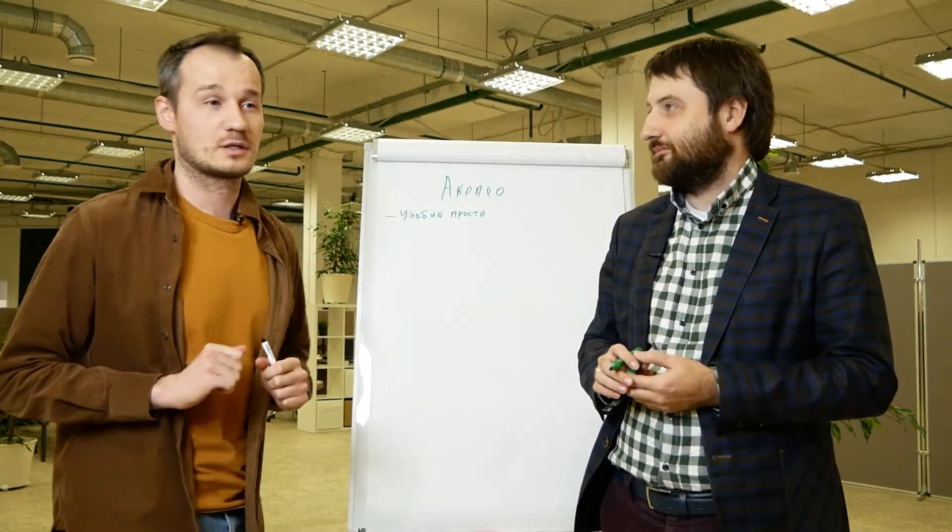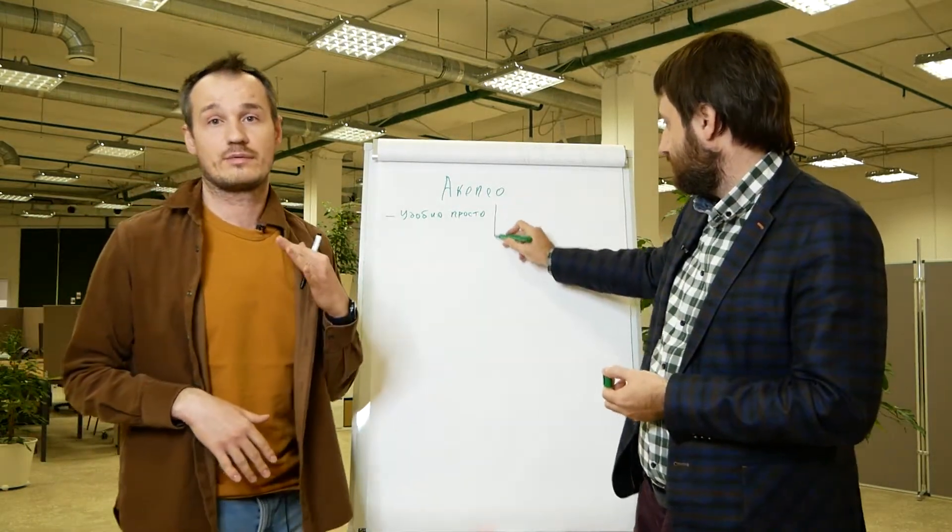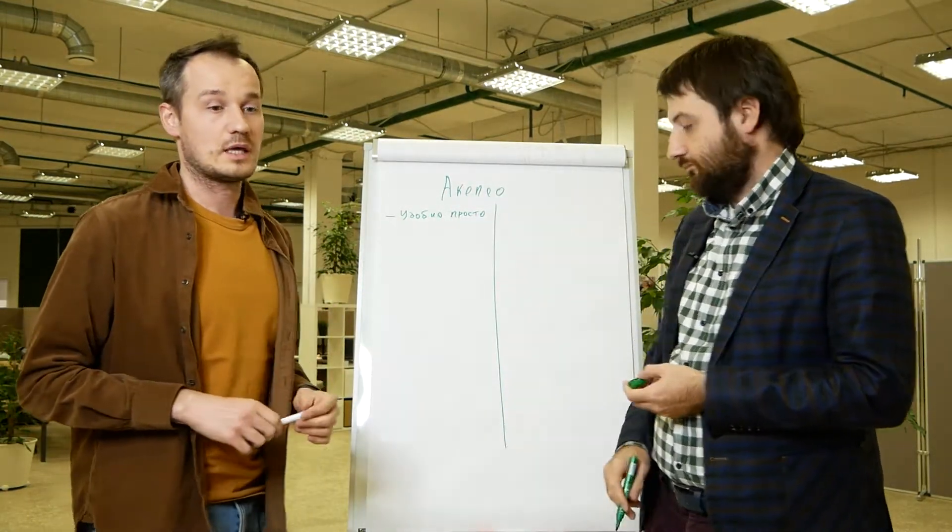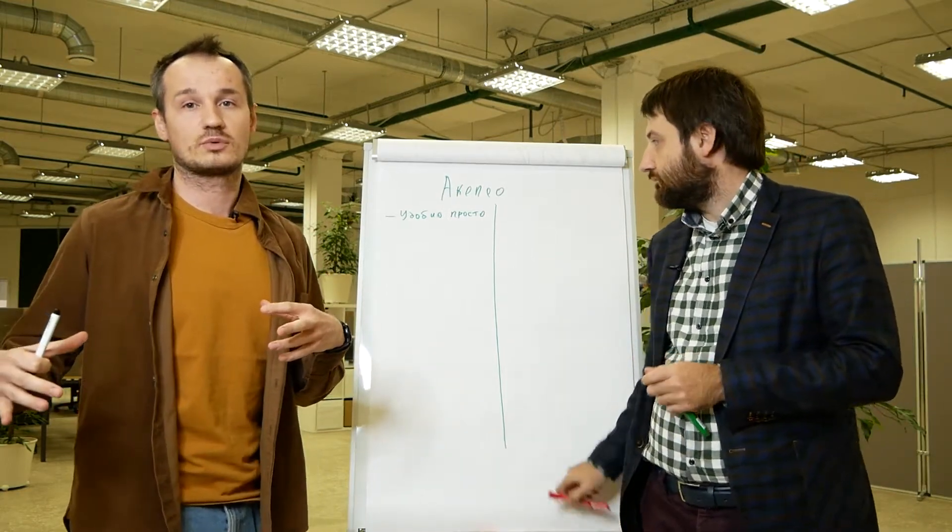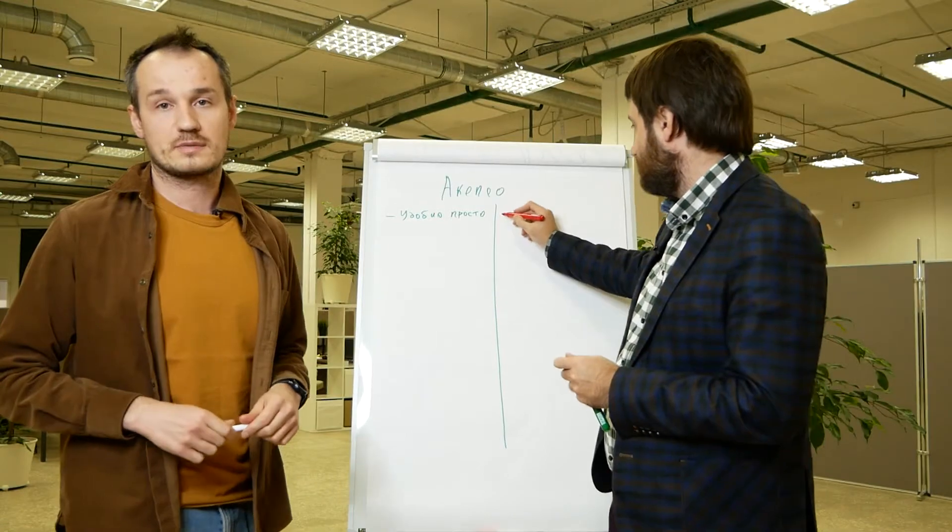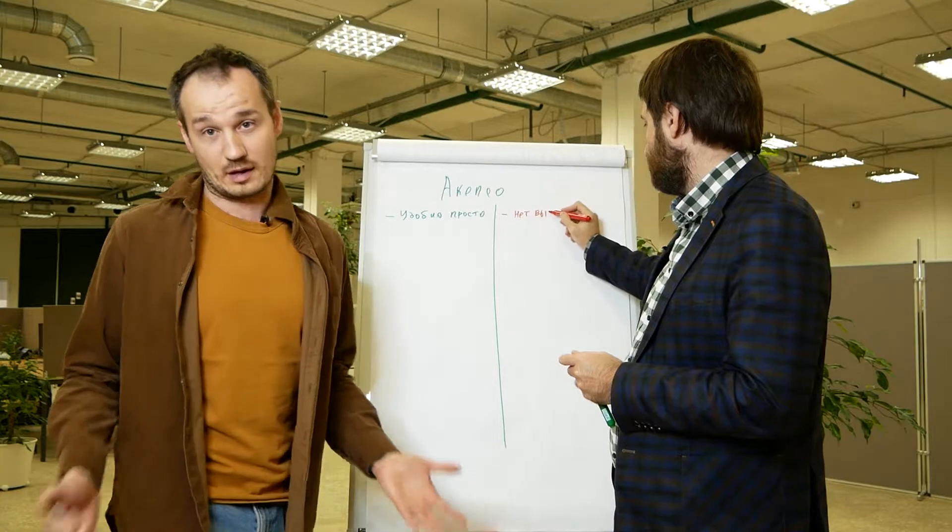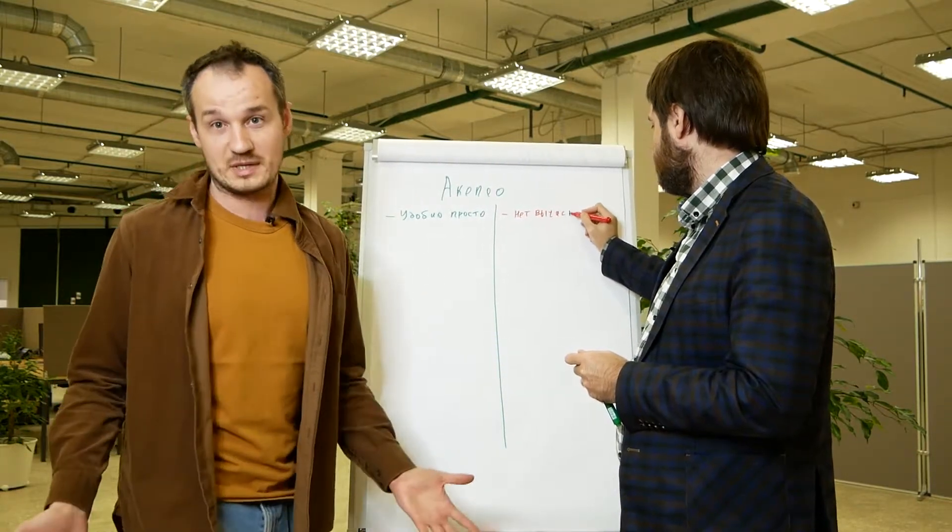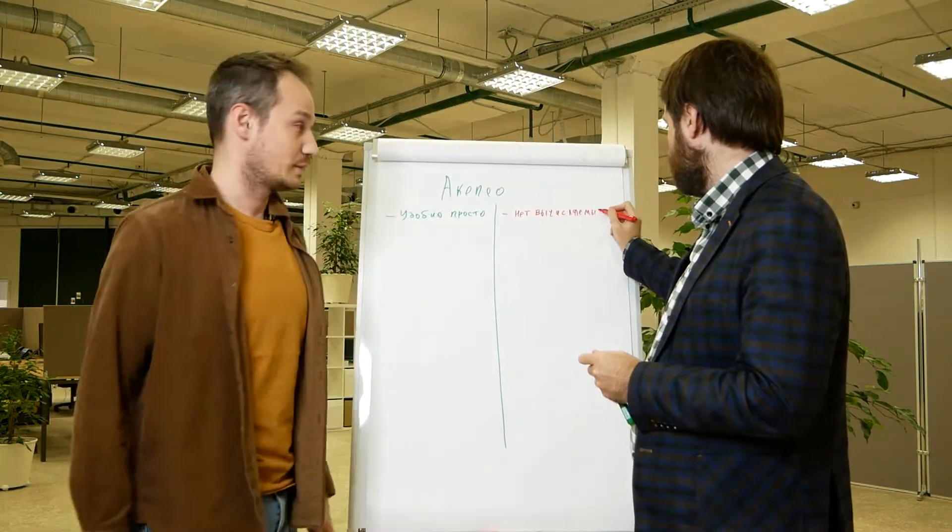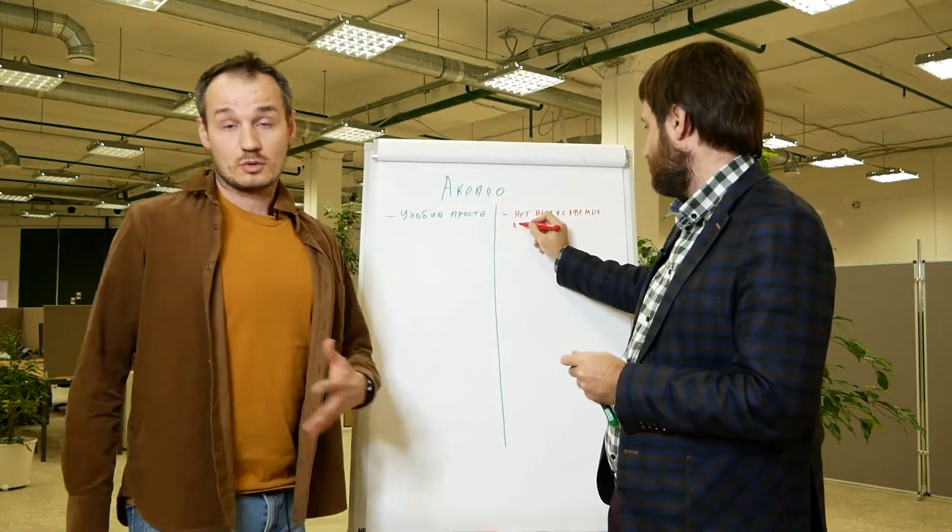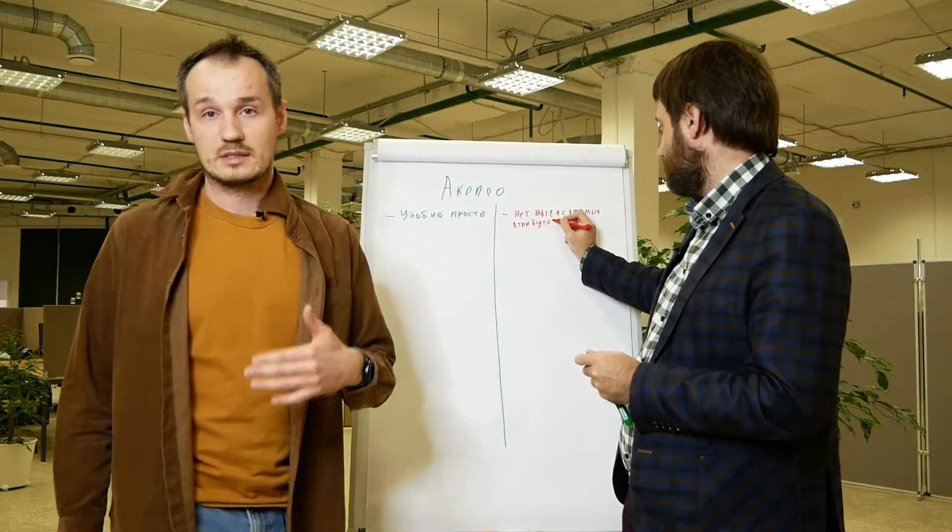Let me be the bad cop then. I'm going to say what I don't like in Akeneo. All the bad things. For instance, it does not support calculated attributes. Also, when it comes to rich attributes, meaning attributes with attributes, they're only available in the Enterprise version. In 2020, it's like, come on, 50k Euro for a calculated attribute.